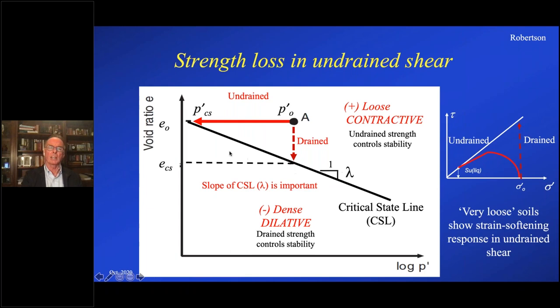It's critical — it's sensitive to the slope of the critical state line. If the critical state line is flatter, everything else being kept the same, it's got a lot further to go. Even though the tendency for contraction is the same, to get to critical state it has to travel a lot further, so it develops a lot more pore pressure, meaning the effective stress decreases more. It goes further down the strength envelope, and you can have these potentially very low liquefied undrained strengths. Because of the curvature of the critical state envelope, it could actually get to essentially zero.